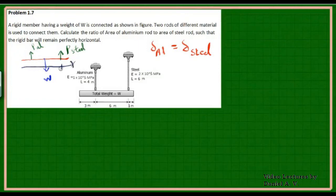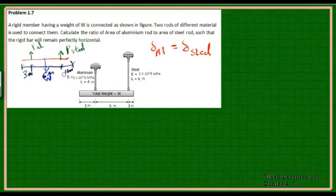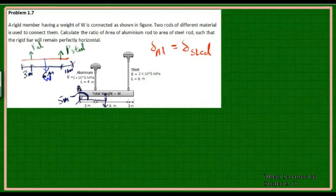The lengths of the different sections are given: one section is 1 meter, another is 3 meters, and the middle section is 6 meters, making the total length 10 meters. The weight acts exactly at the center, which is at a distance of 5 meters. The points are labeled A, B, C, D, and E.